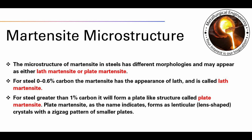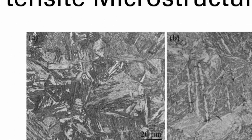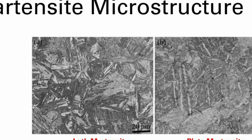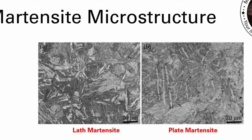For steel with 0–0.6% carbon, the Martensite has the appearance of Lath Martensite and is called Lath Martensite. For steel greater than 1% carbon, it will form a plate-like structure called Plate Martensite. Plate Martensite, as the name indicates, forms as lenticular lens-shaped crystals with a zigzag pattern of smaller plates. Lath Martensite is shown in the left figure and Plate Martensite is shown in the right figure.